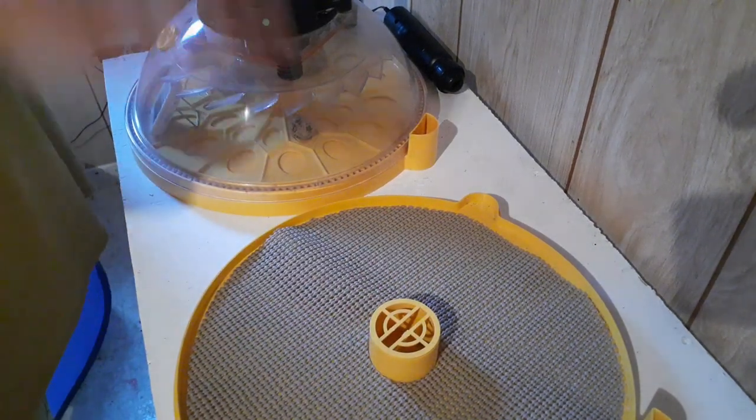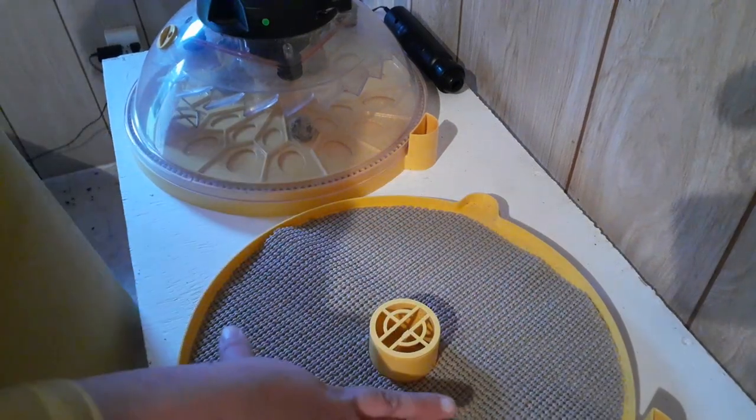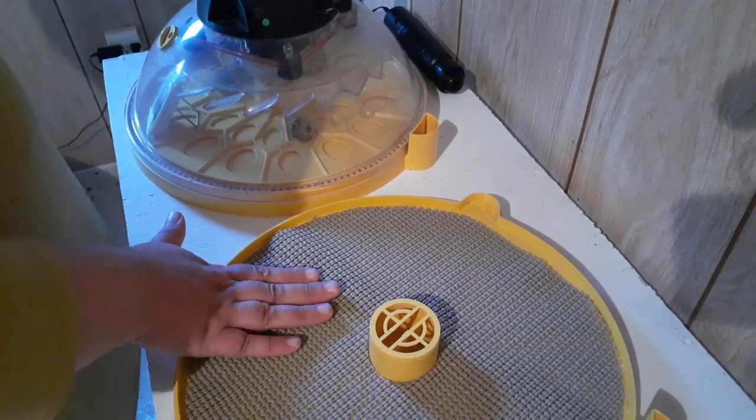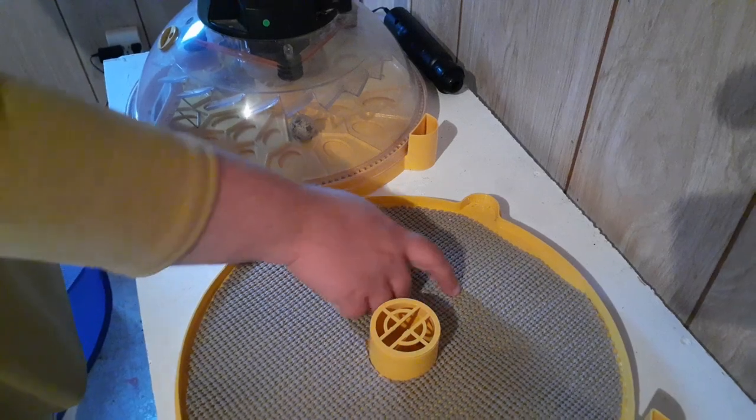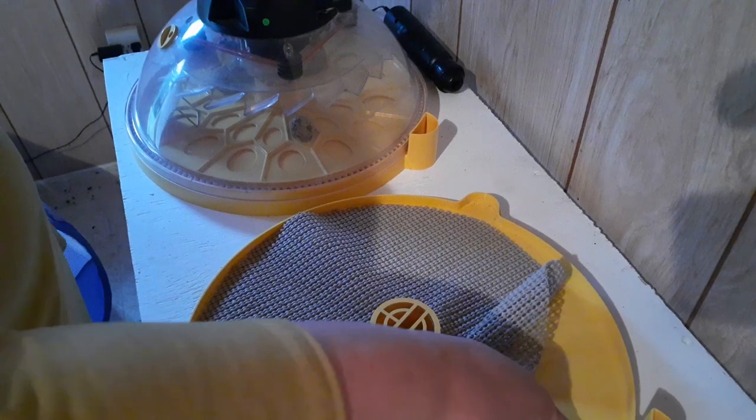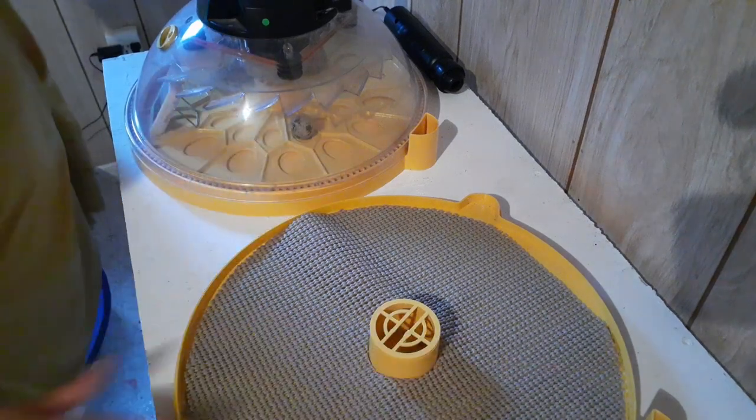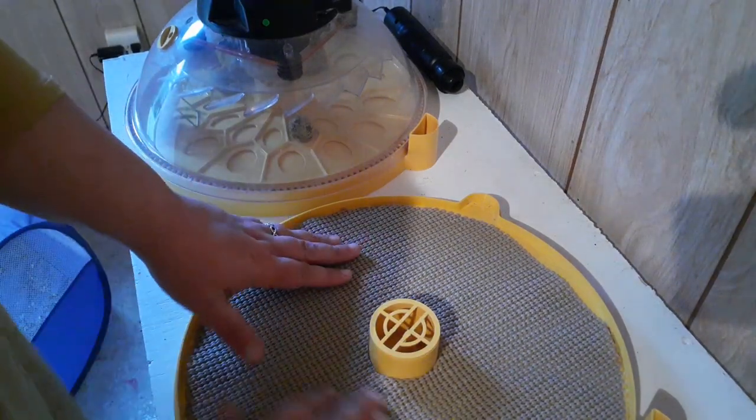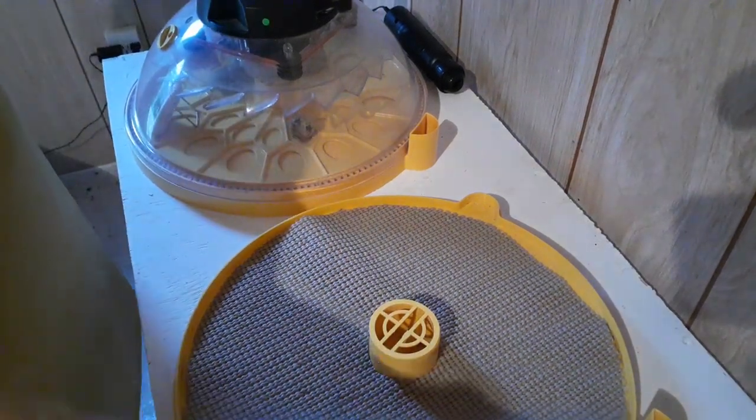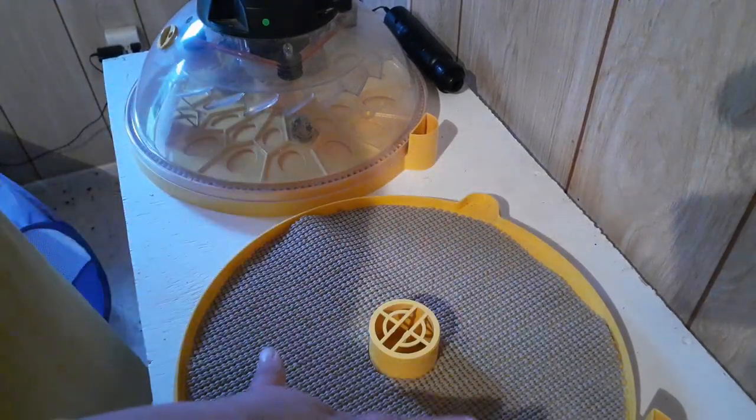A lot of incubators come with cardboard hatching mats. I don't love the cardboard hatching mats, so I use the cardboard hatching mats to cut a piece of this kind of padded shelf liner to put in my incubator because it gives the chicks really good grip because they do need grip. If you don't have anything and they're just walking on this plastic, then what happens is they slip, they can get splay leg, it's not good for them. They need something with grip. So you do need to line your hatcher with something grippy.